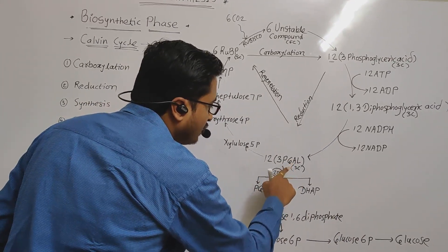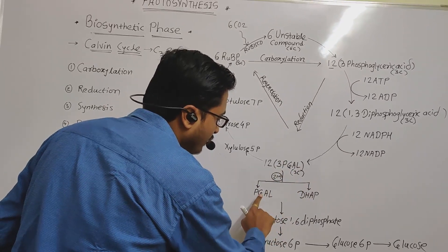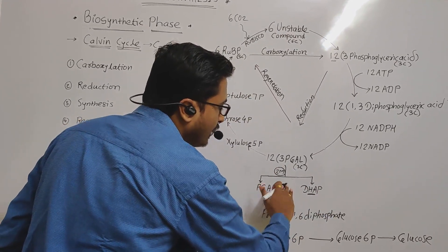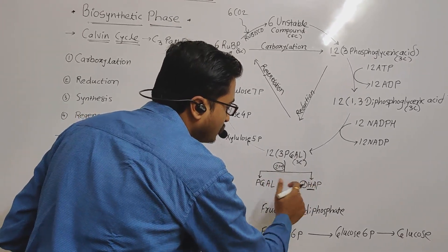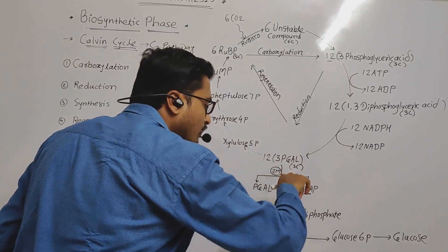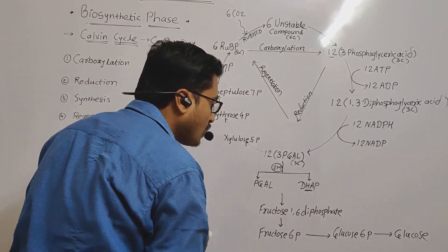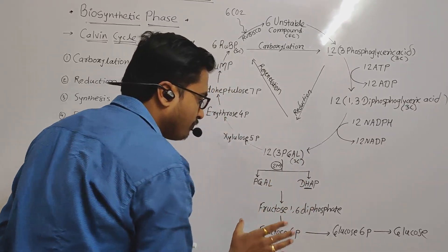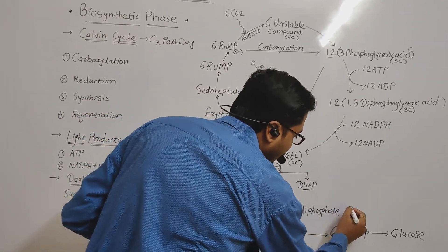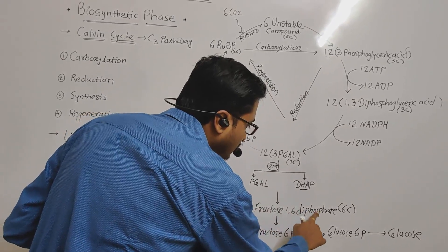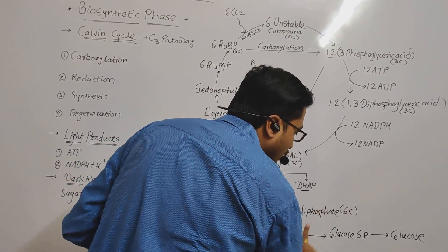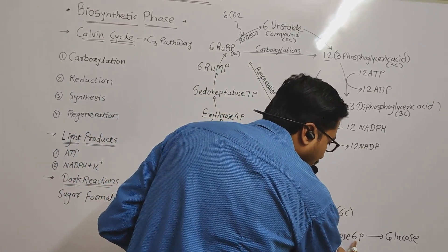One PGAL molecule remains as it is; the other undergoes conversion to dihydroxyacetone phosphate (DHAP) through an isomerization process. After isomerization, an enzyme called aldolase activates and combines these two compounds to form fructose 1,6-diphosphate (6-carbon compound). Fructose 1,6-diphosphate is then converted into fructose 6-phosphate with the release of one inorganic phosphate (Pi). Then fructose 6-phosphate is converted into glucose 6-phosphate by isomerization, again with release of Pi.